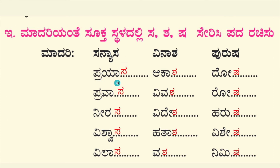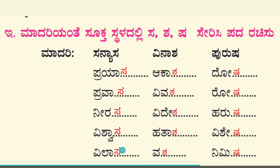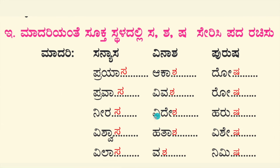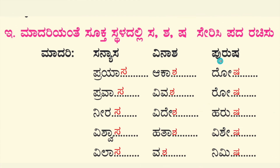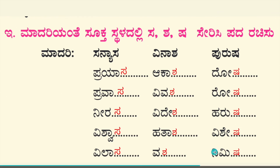Words ending with S: Prayasa, Pravasa, Neerasa, Vishwasa, Vilasa. Words ending with Sh: Akasha, Vivasha, Videsha, Hatasha, Vasha. Words ending with Ṣ: Purusha, Dosha, Rosha, Harusha, Vishesh, Nimisha.